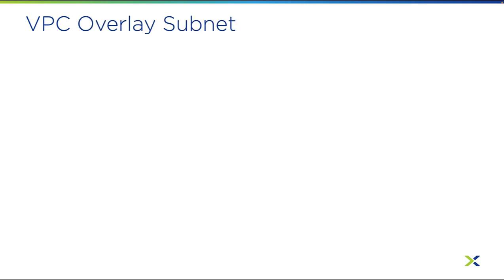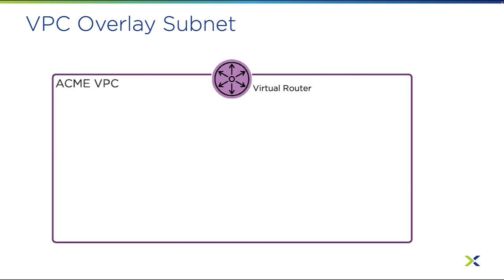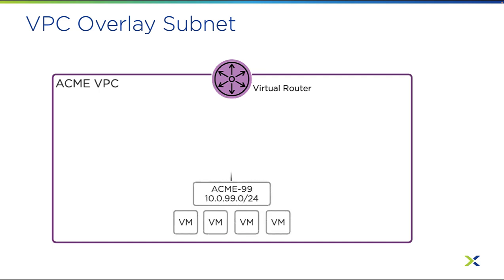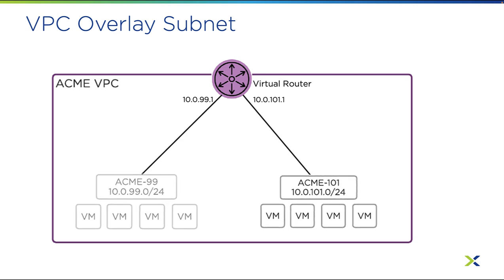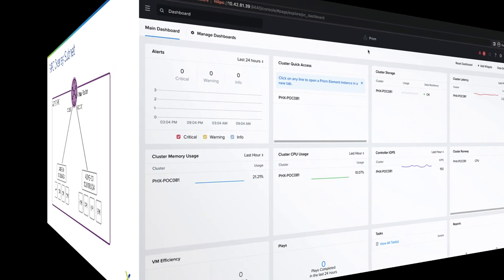Let's look at how to configure these subnets that we'll use with our VPC. First, we will create an overlay subnet. These subnets typically use private IP address ranges. A VPC can have multiple overlay subnets; when that's the case, the subnets within the VPC must be unique — there should be no IP address overlap.